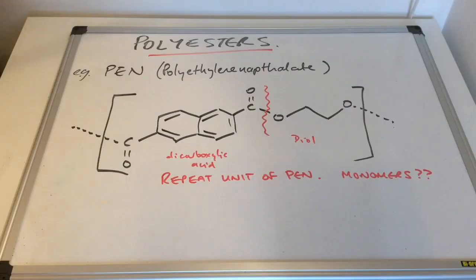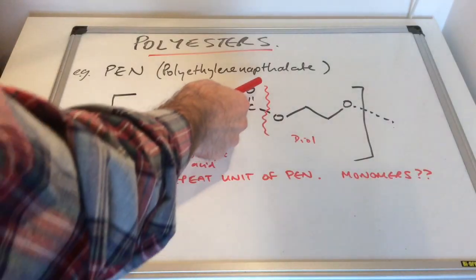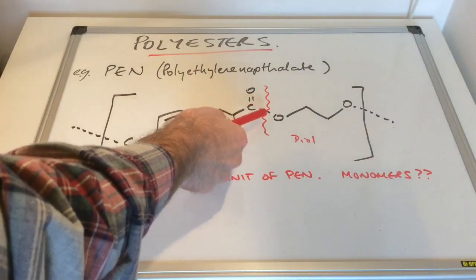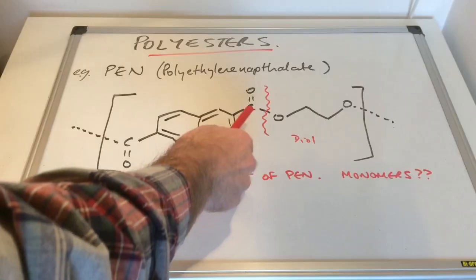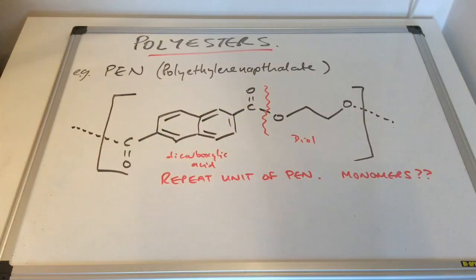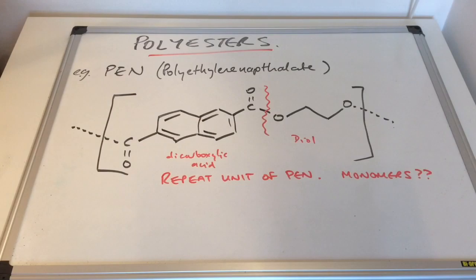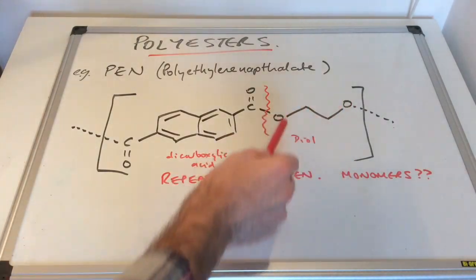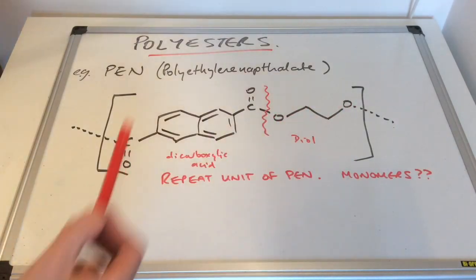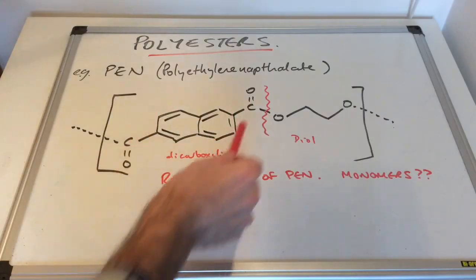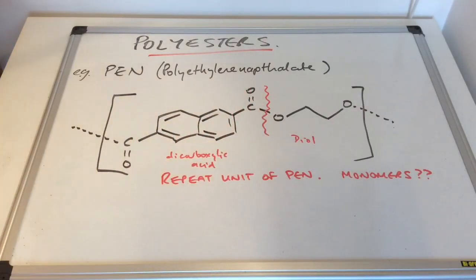So in terms of how you'd process this question, you can see I've sort of drawn a squiggly line through the ester bond there. And that's because that's where these two monomers will have joined together. So we're going to effectively pull them apart. And remember polyester is made from diols and dicarboxylic acids. So we need to turn this part here with the single bonded O into a diol. And this with the C double bond O would have originally been a dicarboxylic acid.